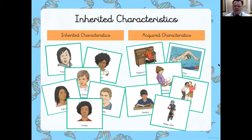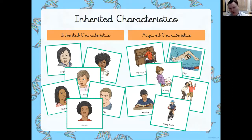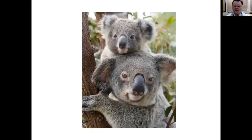You can see the categories there and the characteristics that are inherited and acquired — you can identify those from the previous slide. Were there any surprises? Were there any that you thought were inherited but were actually acquired, or vice versa? And then of course we have a koala and its offspring, where we can see the inherited characteristics.